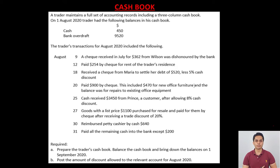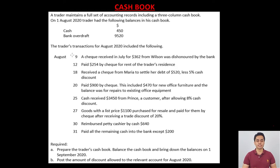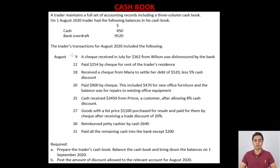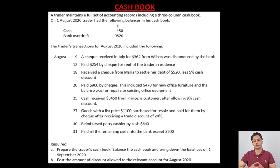Before starting the cashbook, let's read all the transactions and decide whether each would appear on the debit side or the credit side. The first transaction on August 9 is a check received in the previous month — July — that is dishonored this month. When the check was received in July it was recorded on the debit side, so the dishonored entry has to be recorded on the credit side of the cashbook. The August 12 entry is a payment by check, which will obviously appear on the credit side.